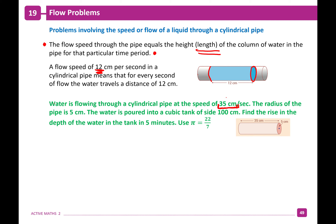For five minutes, this water goes into a cubic tank. First, find the volume of water flowing into the tank every second. Then find the volume for five minutes by multiplying that volume by the number of seconds.